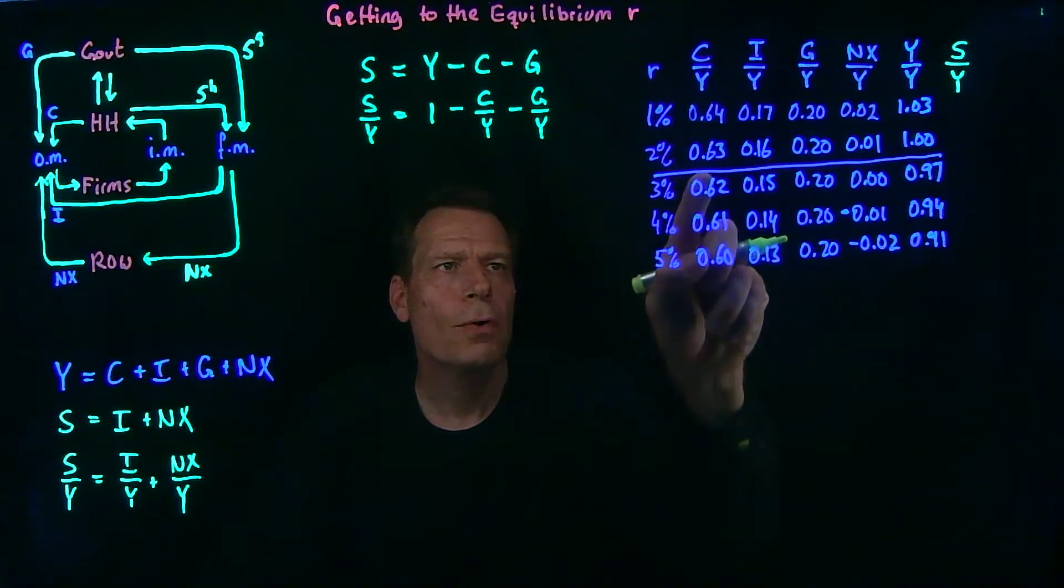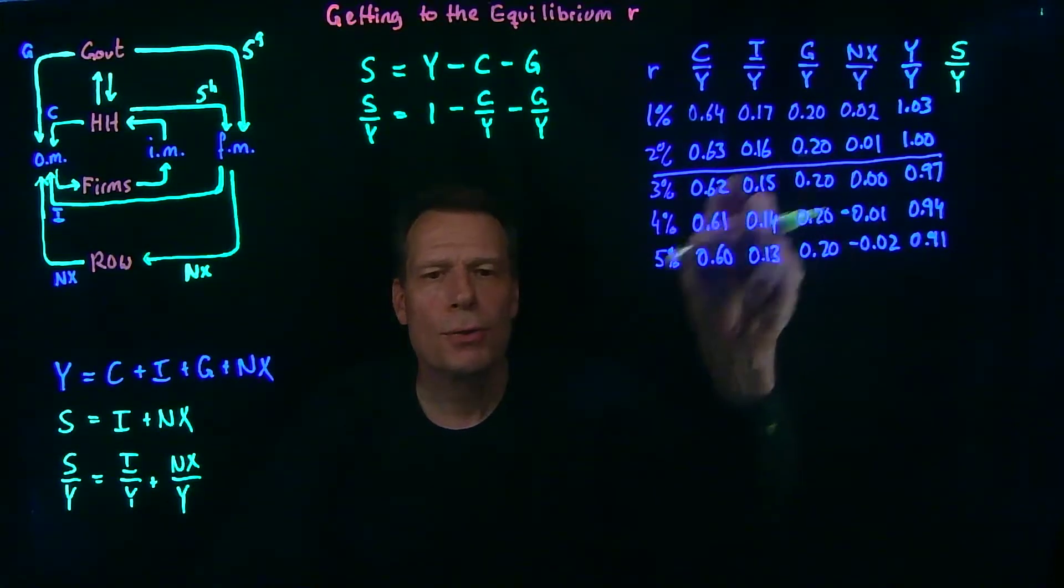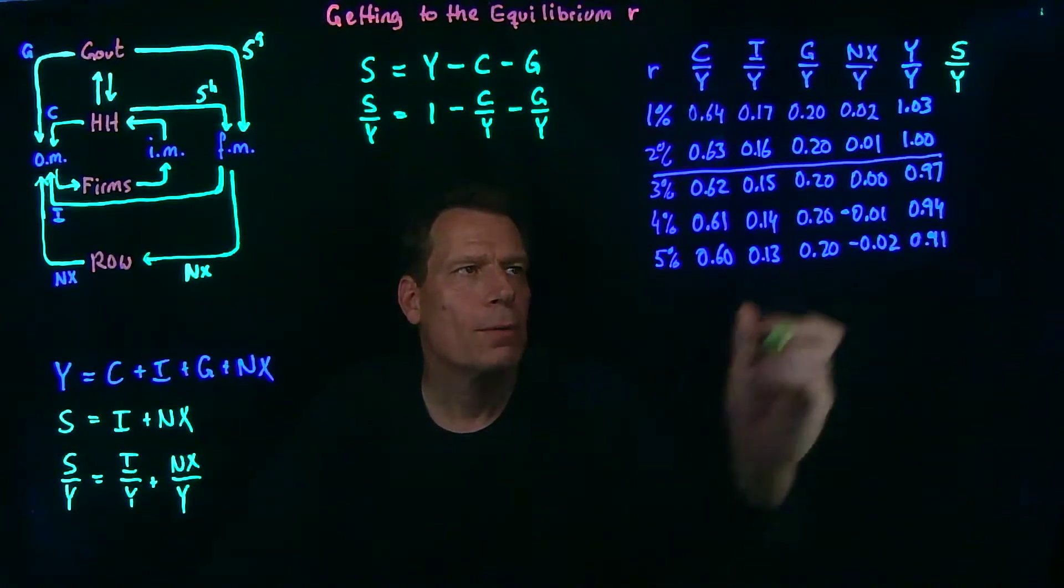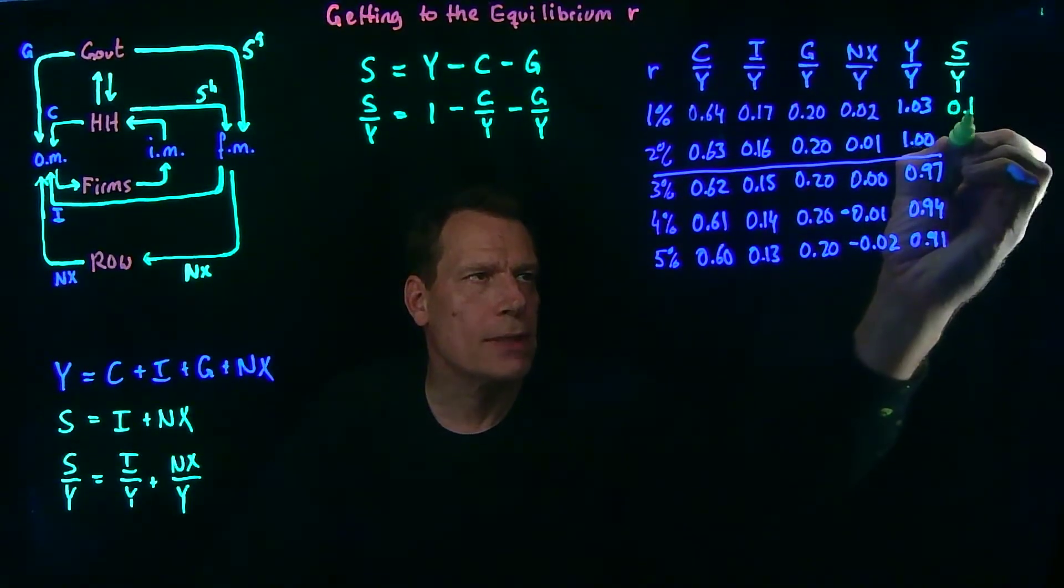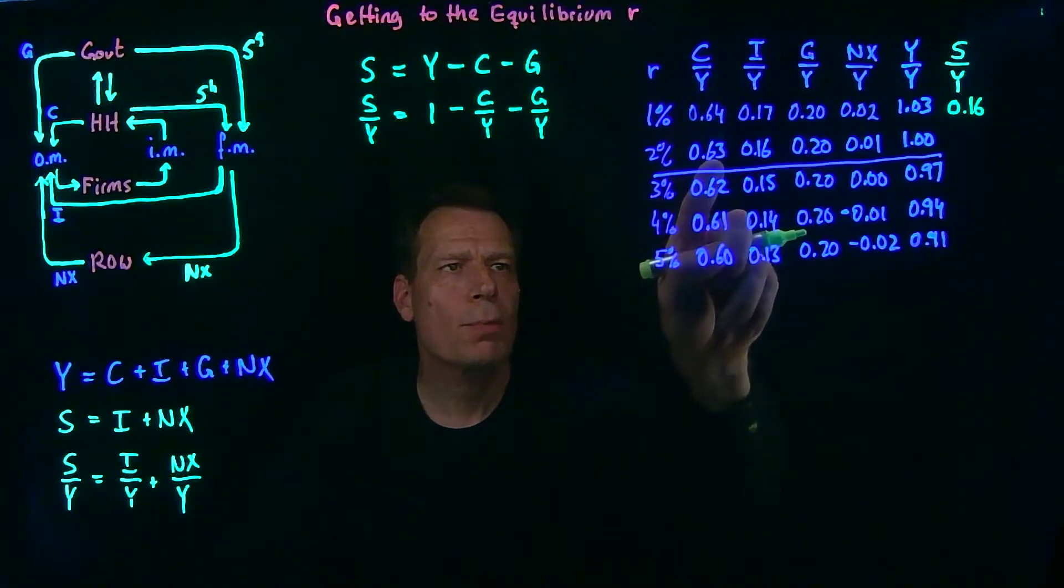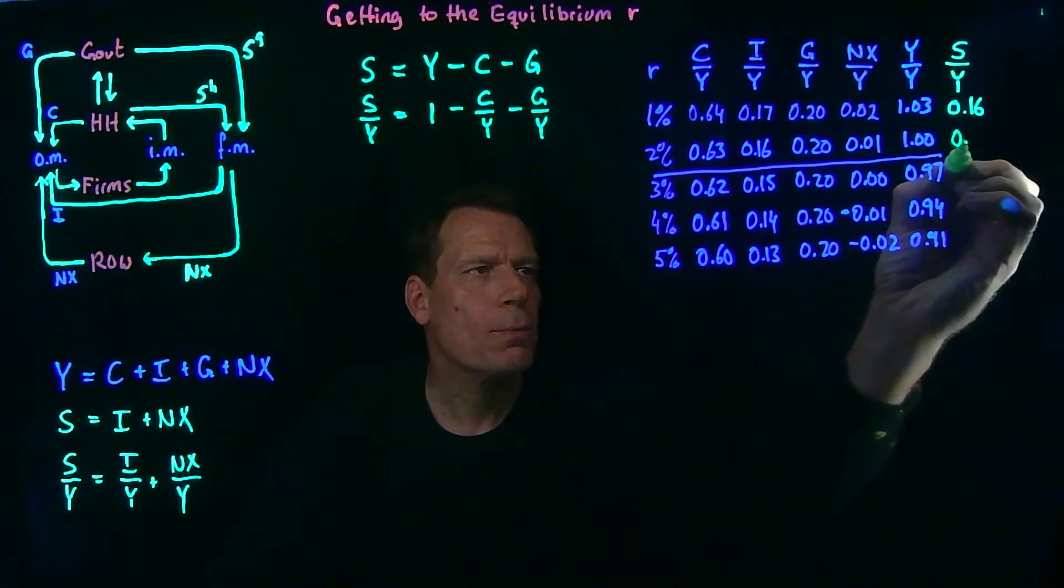So in the first row, we say 1 minus 0.64 minus 0.2. Well, that's 1 minus 0.84, which gives us 0.16. In the second row, we say 1 minus 0.63 minus 0.2. That's 1 minus 0.83, which leaves us with 0.17.